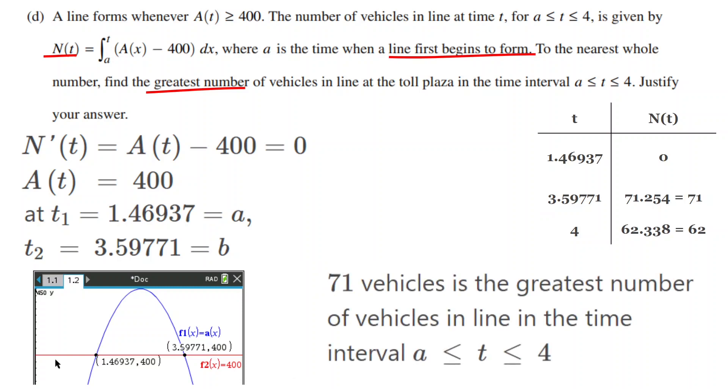71 vehicles is the greatest number of vehicles in line in the time interval a less than or equal to t less than or equal to 4.